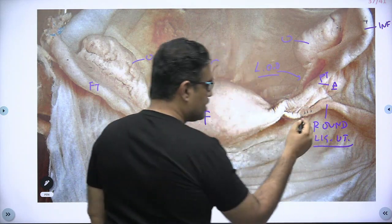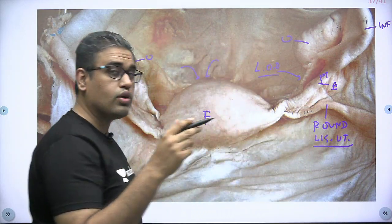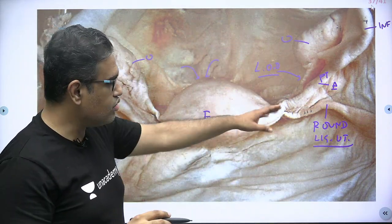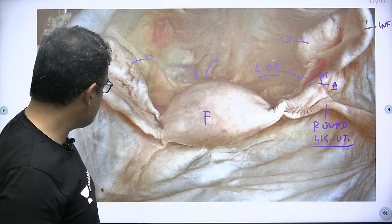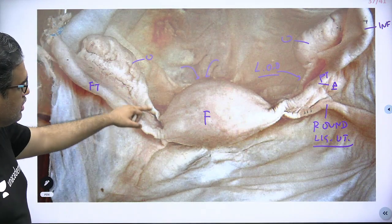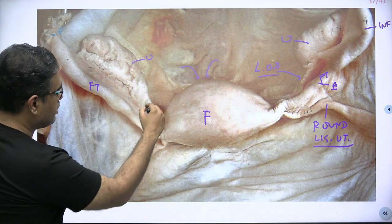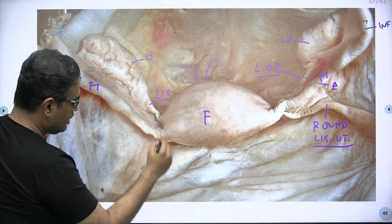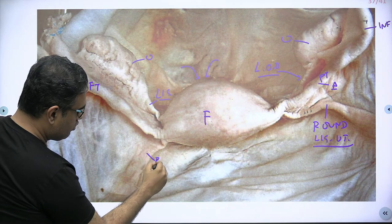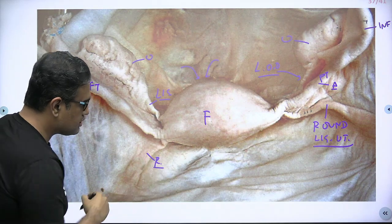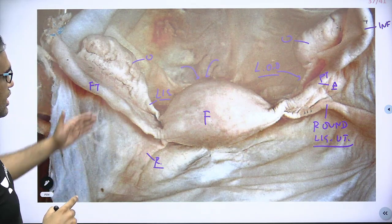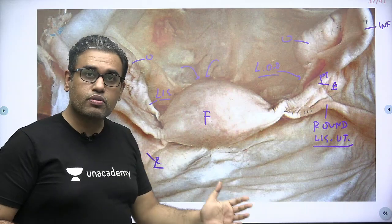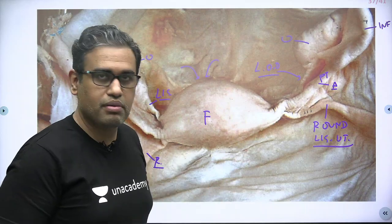The round ligament of uterus — as we must all know — is the content of the inguinal canal in females. Same on this side: this will be the ligament of ovary, and that is the round ligament of uterus. These two — the ligament of ovary and the round ligament of uterus — are derivatives of the gubernaculum in females.